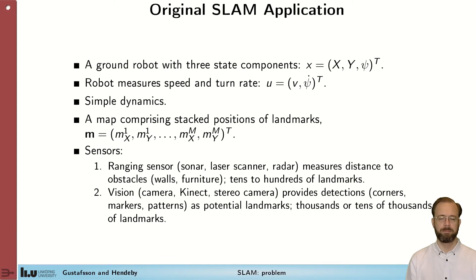That gave them tens to hundreds of landmarks. Or they used a camera sensor. So they used a normal camera or Kinect or stereo cameras to get depth as well. Provides detections of corners and specific patterns in images that can be re-seen and considered landmarks. The difference here is that that makes up thousands or maybe tens of thousands of landmarks that need to be considered.